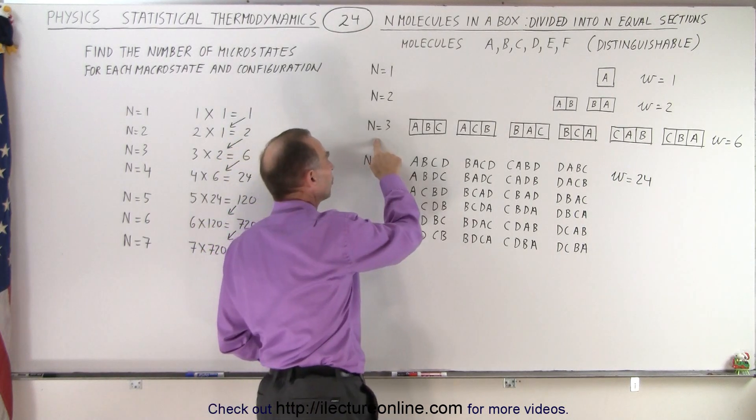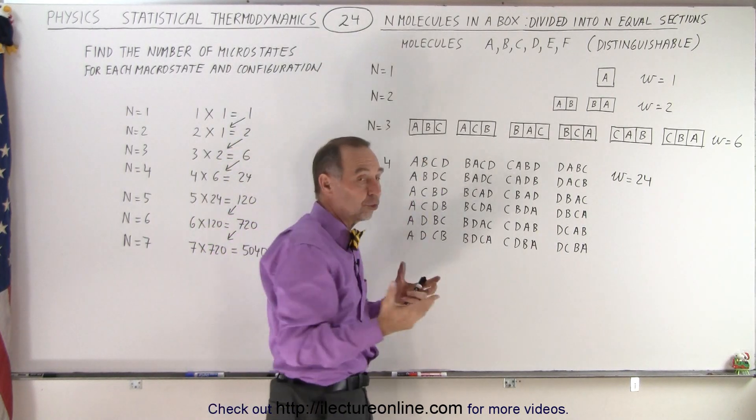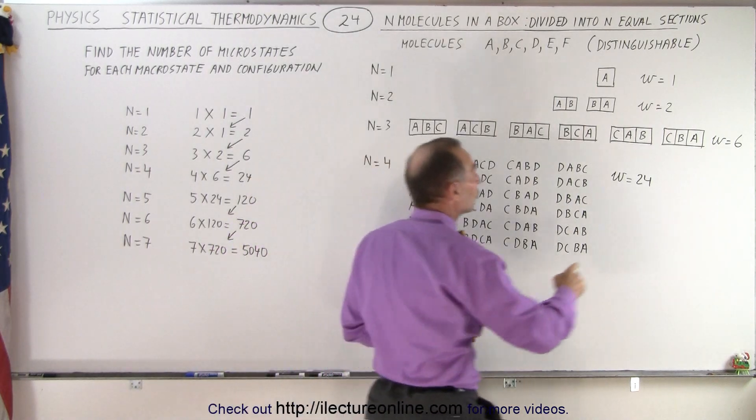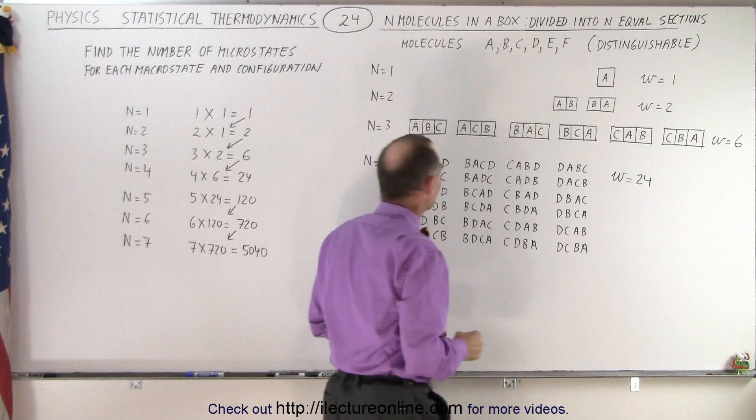Then when we have three molecules and three partitions in such a way that one molecule goes into each partition in the box, then we can see that there's a total of six microstates.